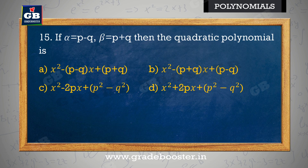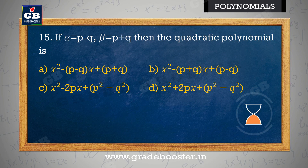If alpha = p − q and beta = p + q, then the quadratic polynomial is: a) x² − (p − q)x + (p + q), b) x² − (p + q)x + (p − q), c) x² − 2px + (p² − q²), d) x² + 2px + (p² − q²).